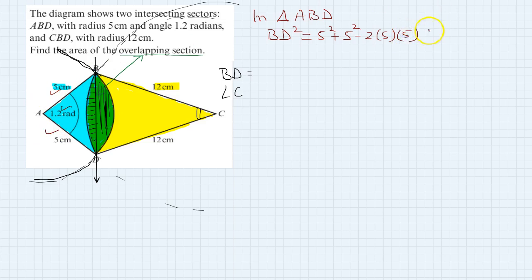5 squared plus 5 squared minus 2 times 5 times cos 1.2. That equals 25 plus 25, which is 50, minus 50 cos 1.2.